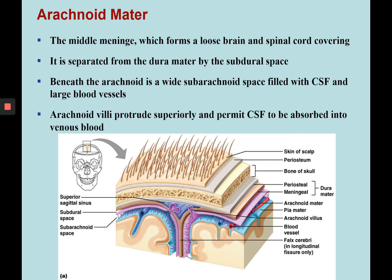The arachnoid mater is the middle meningeal layer — a loose brain covering that also covers the spinal cord. It's separated from the dura mater via the subdural space, which means under the dura mater and is filled with cerebrospinal fluid. Beneath the arachnoid is a wide subarachnoid space between the pia mater and arachnoid mater, filled with even more cerebrospinal fluid and large blood vessels. The arachnoid villi protrude into dural sinuses and permit cerebrospinal fluid to be absorbed from venous blood.